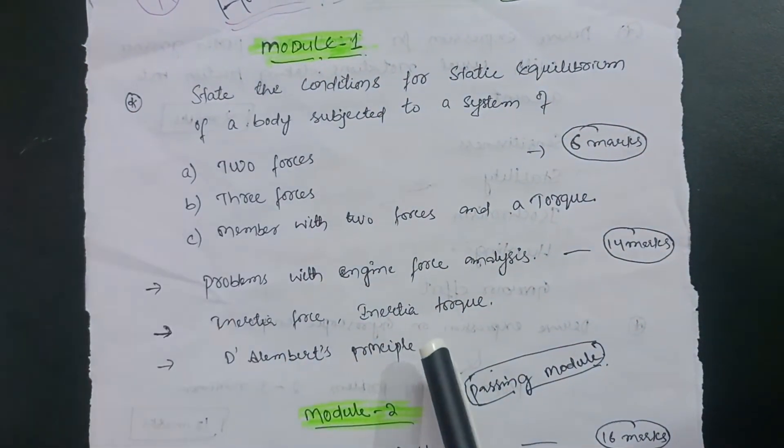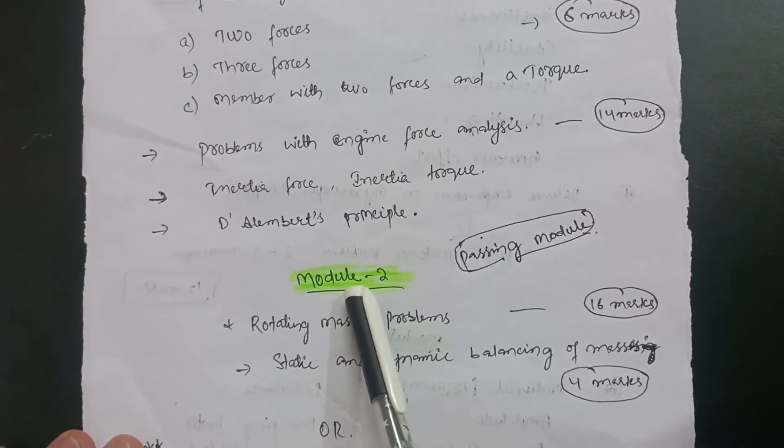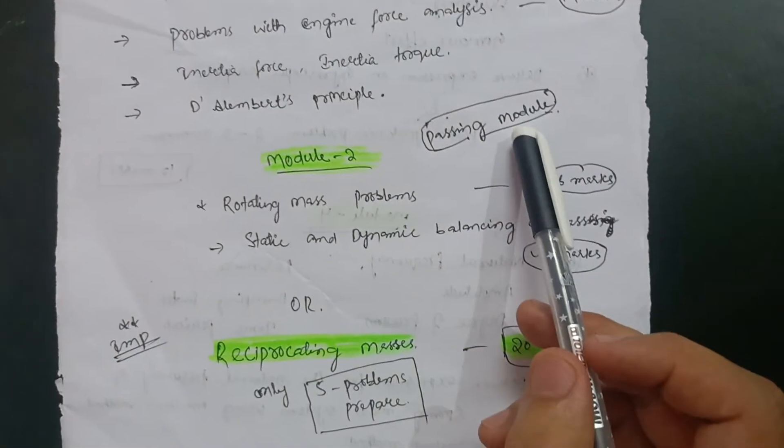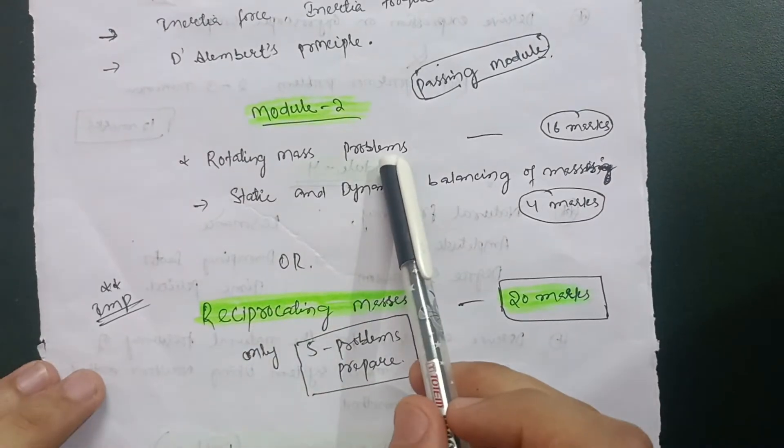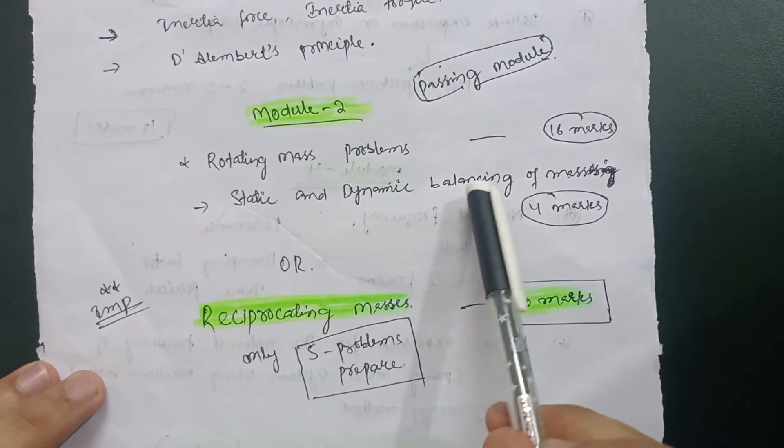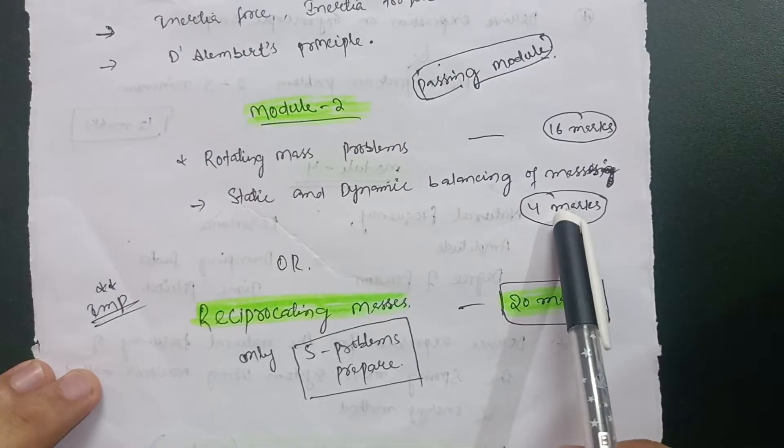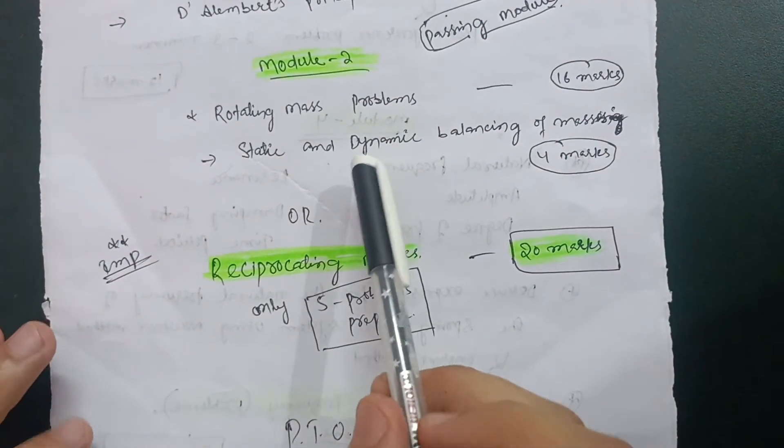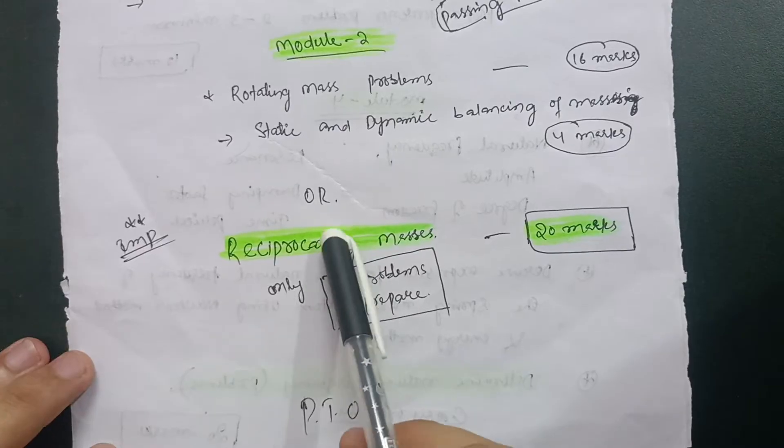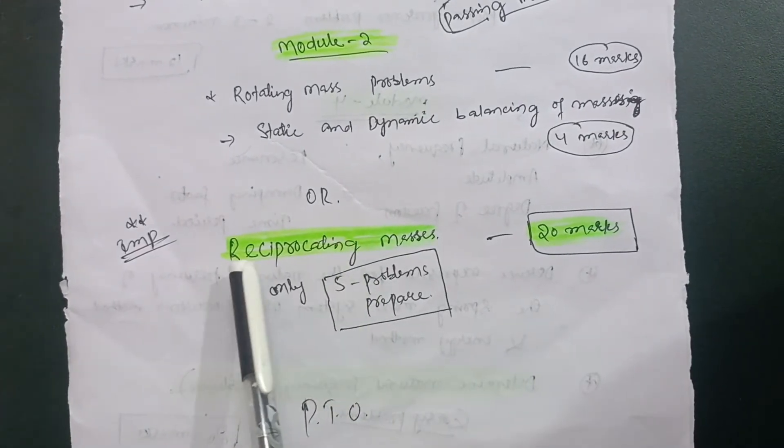Just go through this particular content and you will easily score in the first module. Now the second module, which I call the passing module, carries two parts: one is rotating mass problems, and static and dynamic balancing of mass. This is the theory part carrying four marks, and the other carries 16 marks.